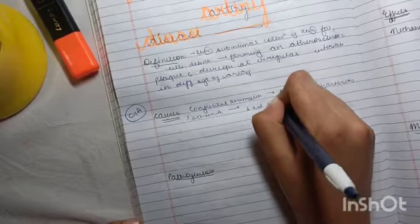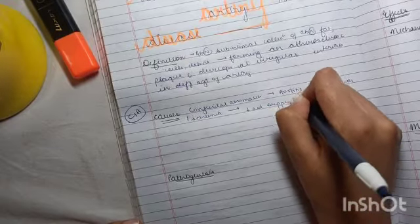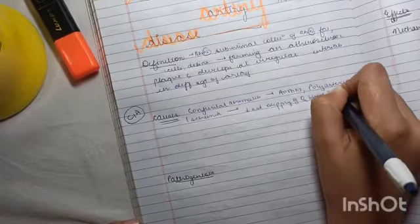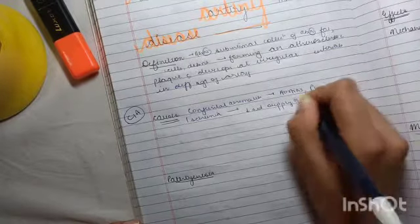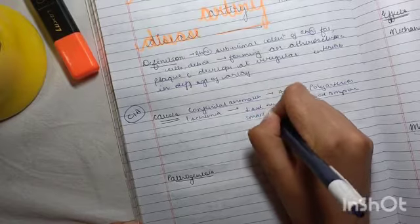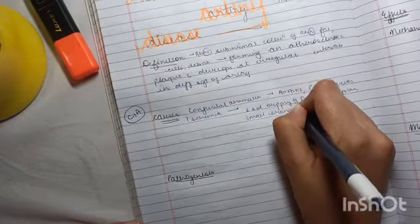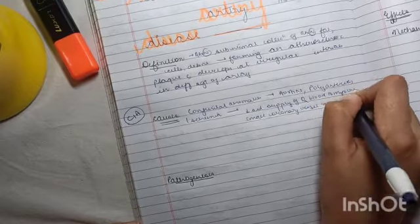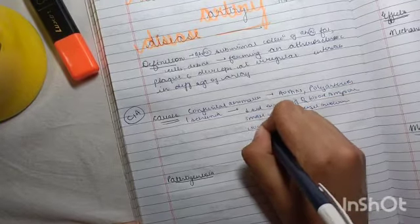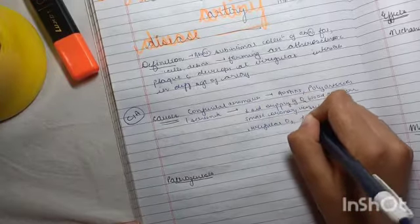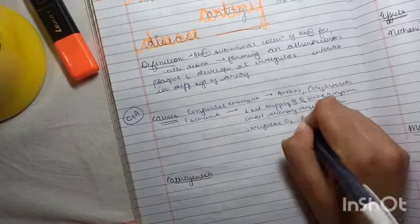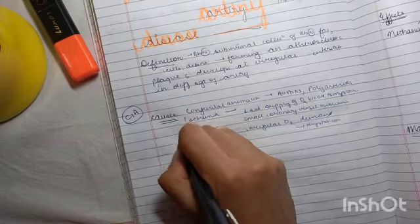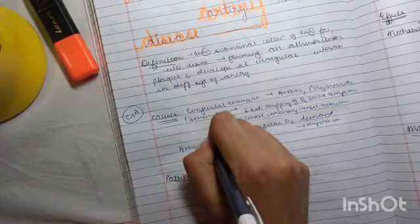I for ischemia - it can occur due to decreased supply of oxygenated blood to myocardium, small coronary vessel involvement, or irregular oxygen demand in thyrotoxicosis. A for atherosclerosis, which is the foremost cause of coronary artery disease.